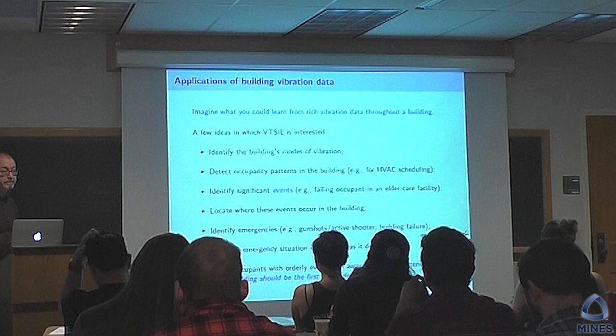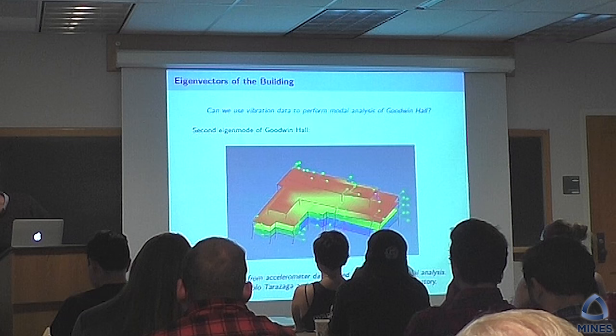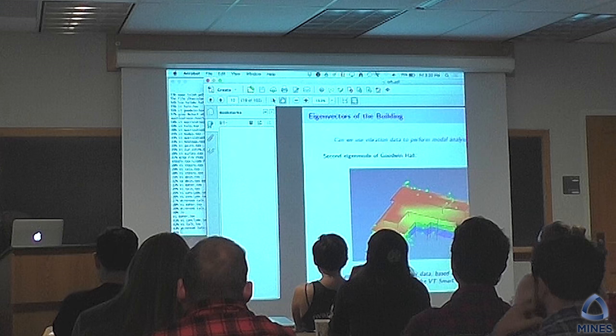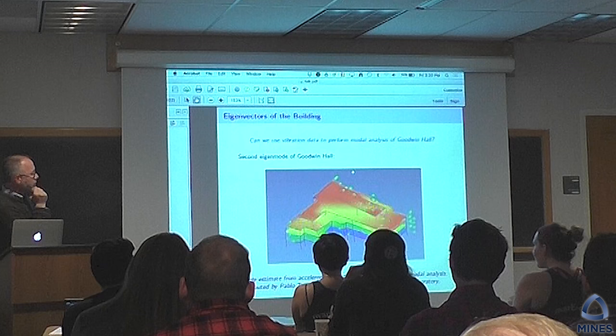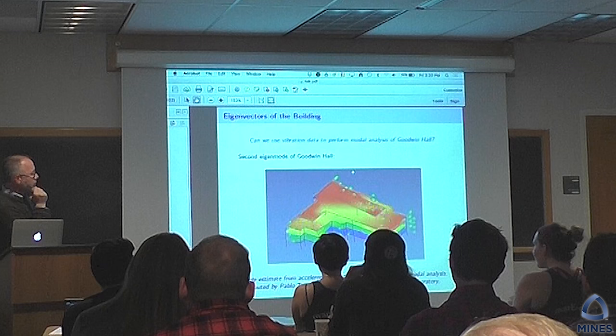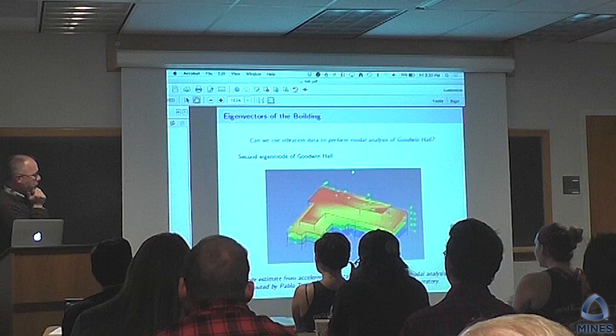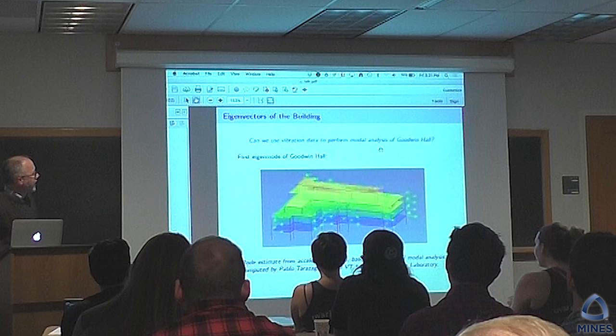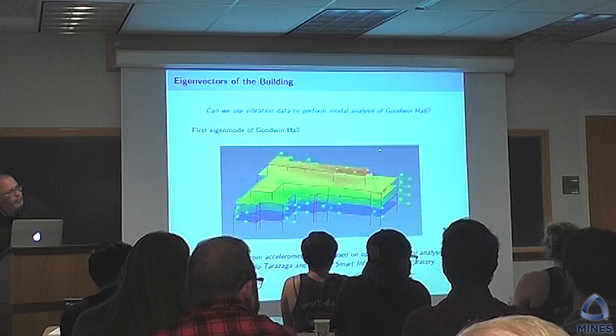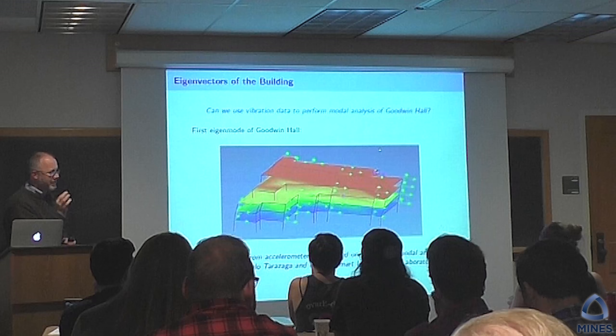Here are the building modes — that's the second mode of the building, you can see it twisting. These modes are detected just from the ambient vibrations of the building; we're not driving the building at a certain frequency. The building administrators got a little worried when we wanted to bring a special truck to shake it. Here's the first mode — you can see the building swaying. People don't like to know buildings move around, but they don't move around quite this much. At the top of a tall building you can feel this kind of thing — they really do sway.